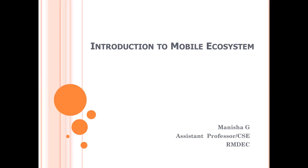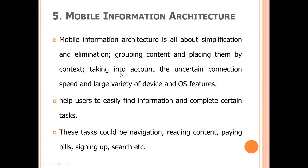We are going to see the next topic in Introduction to Mobile Ecosystem: Mobile Information Architecture. Mobile Information Architecture is all about simplification and elimination, grouping content and placing them by context, taking into account the uncertain connection speed and large variety of device and OS features.